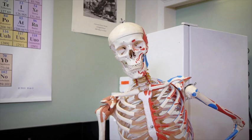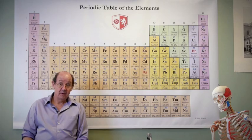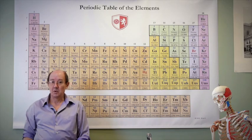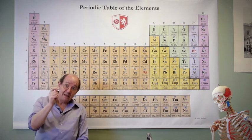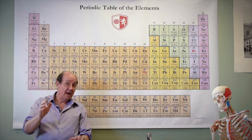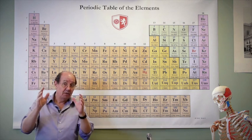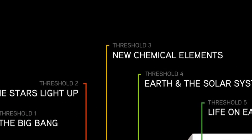Well that two percent is actually a huge deal. Without it you couldn't make my friend Raoul over here, you couldn't make me, you couldn't make you. So it really makes a difference and that's why in this course we call the creation of new chemical elements the third great threshold of complexity.